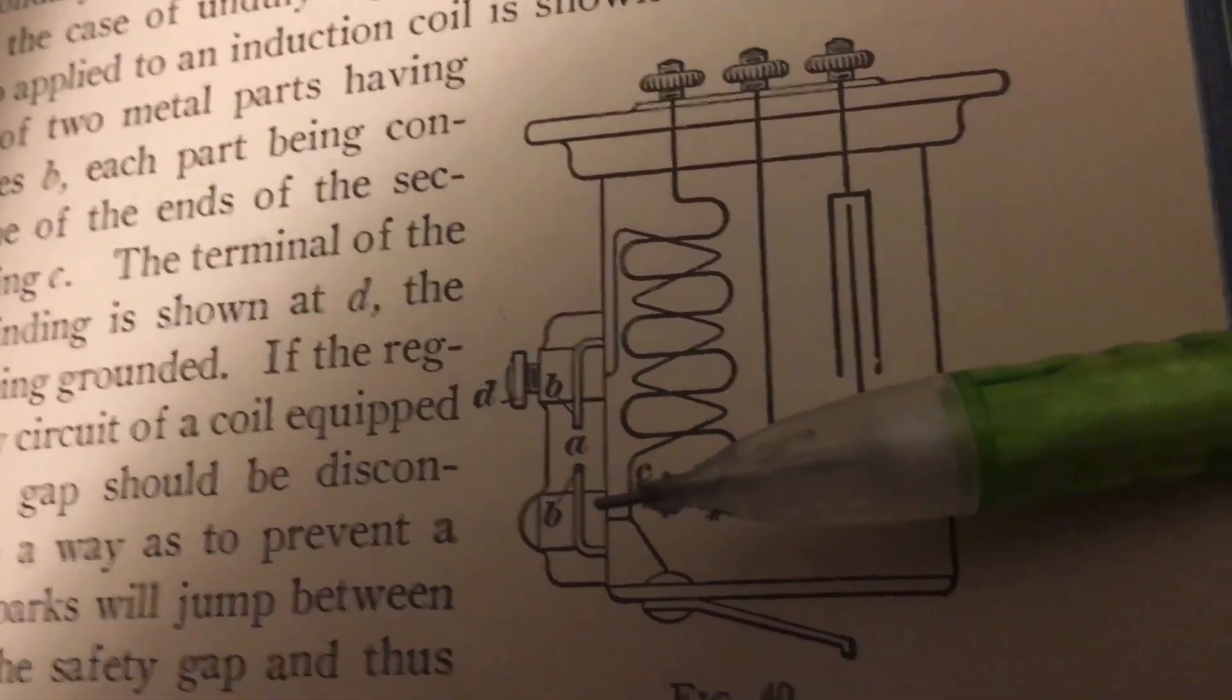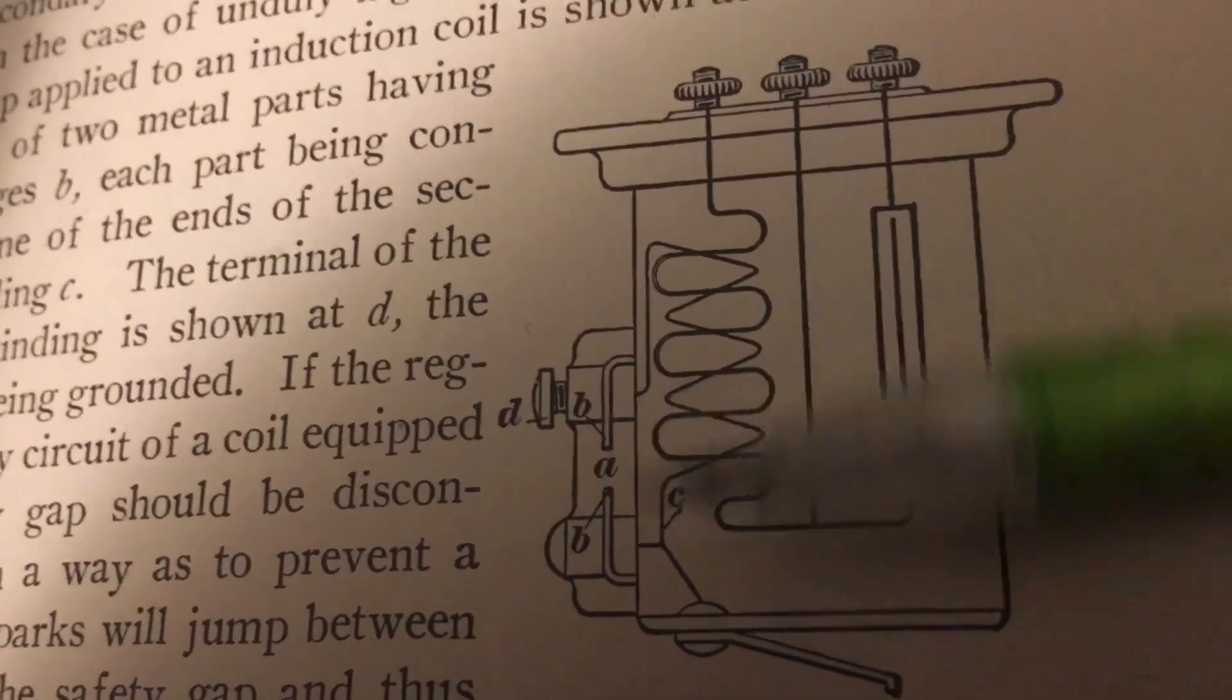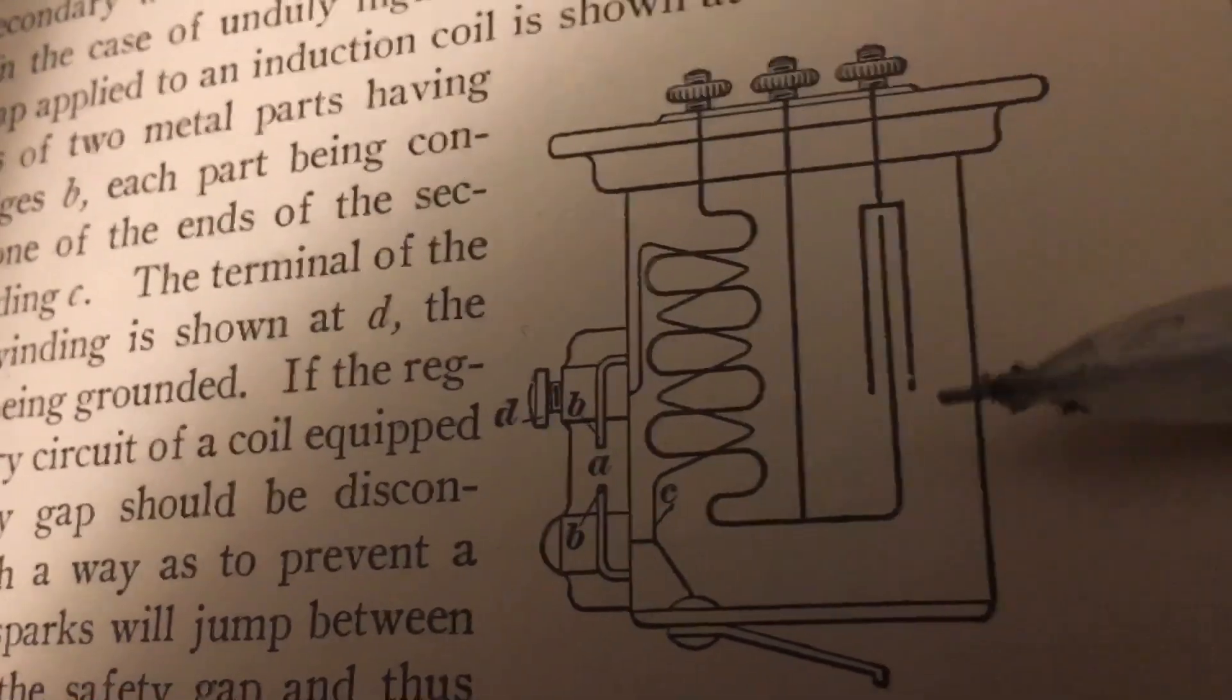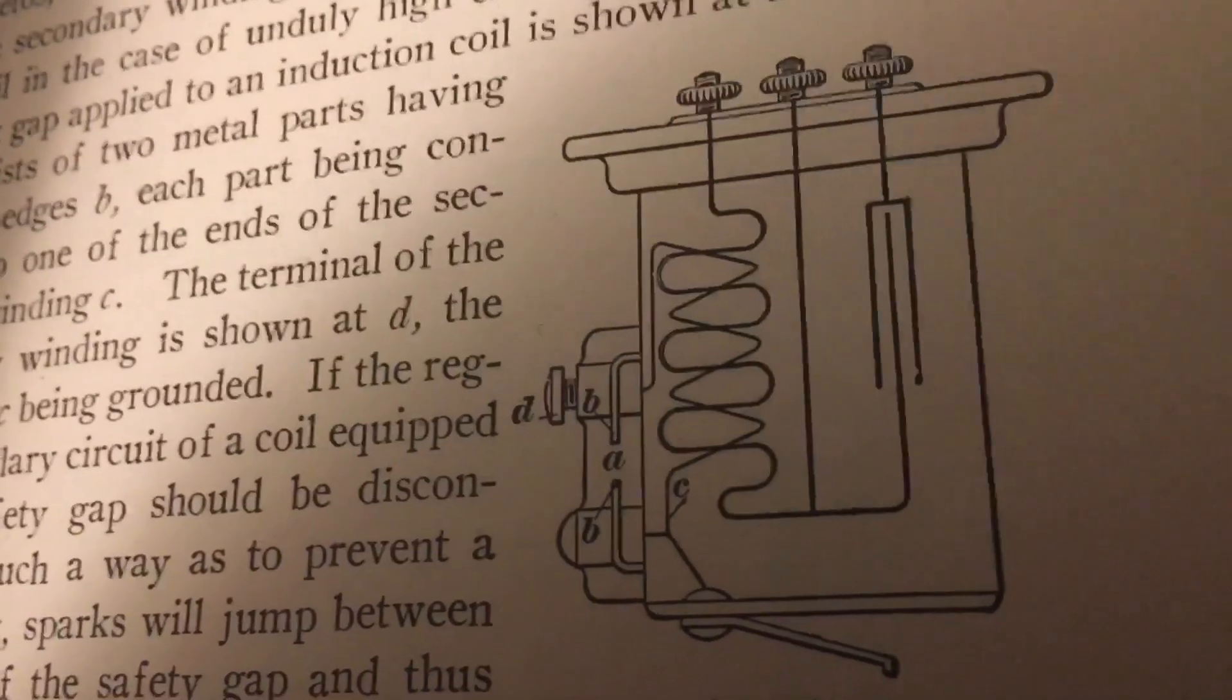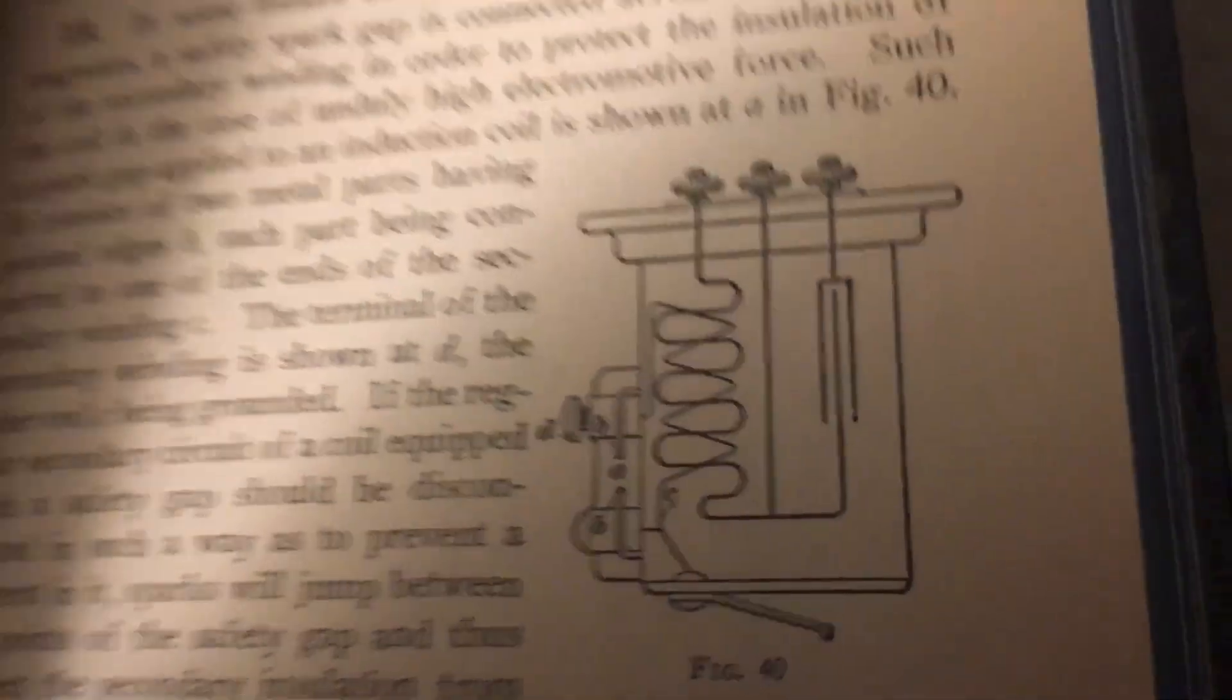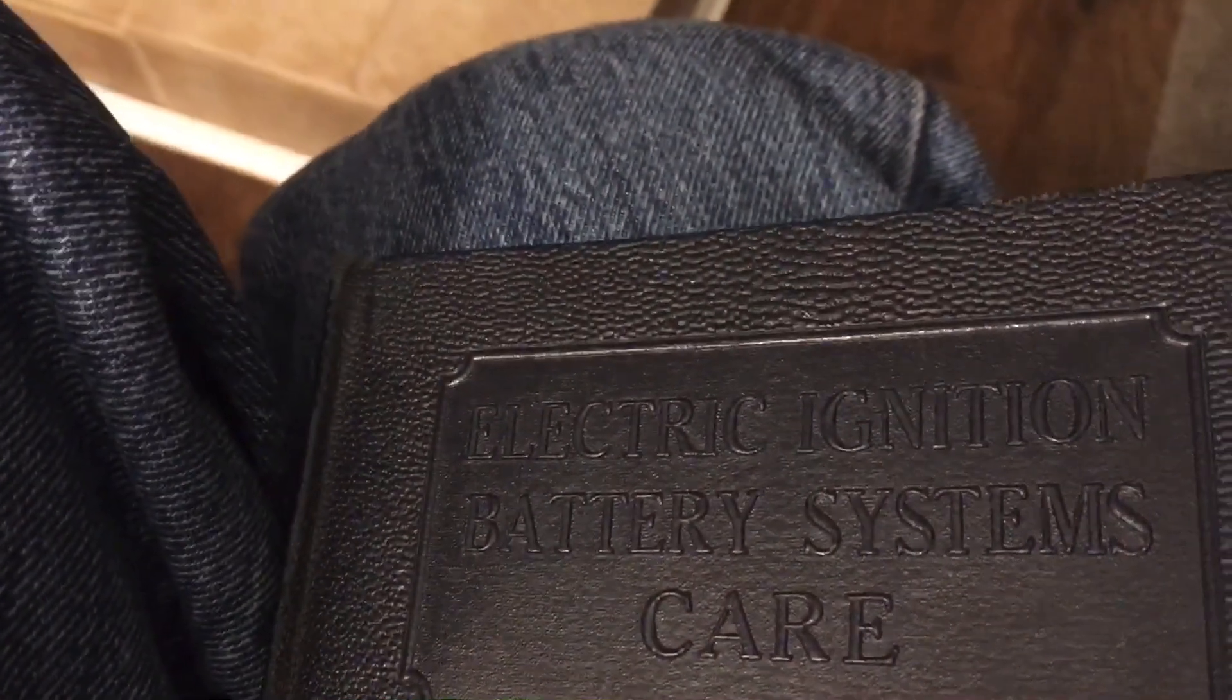Again, the whole point of the safety gap is to save the coil assembly in the event there's a failure on the secondary distribution end of things. Very clever indeed. This particular book is from 1928.